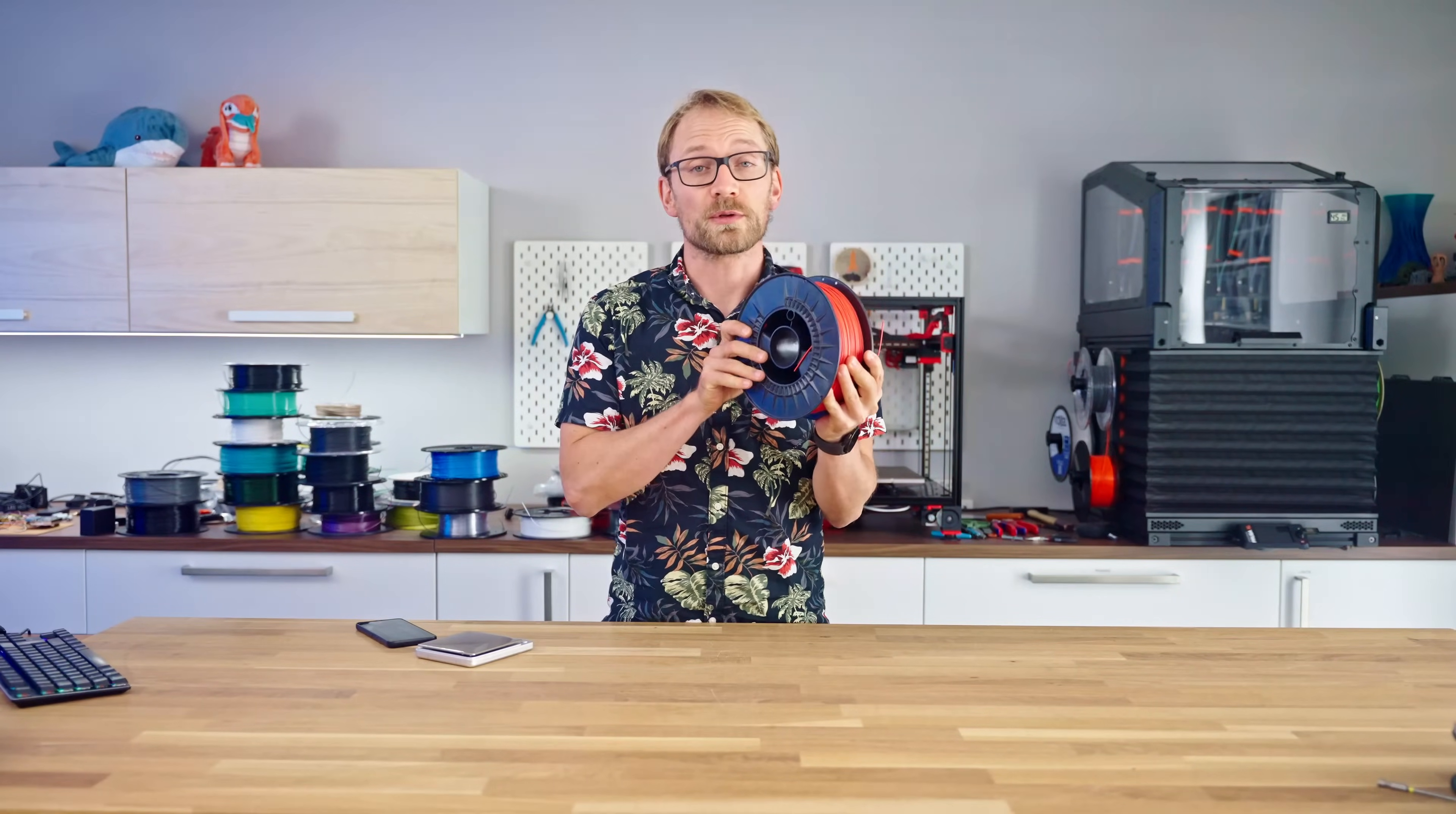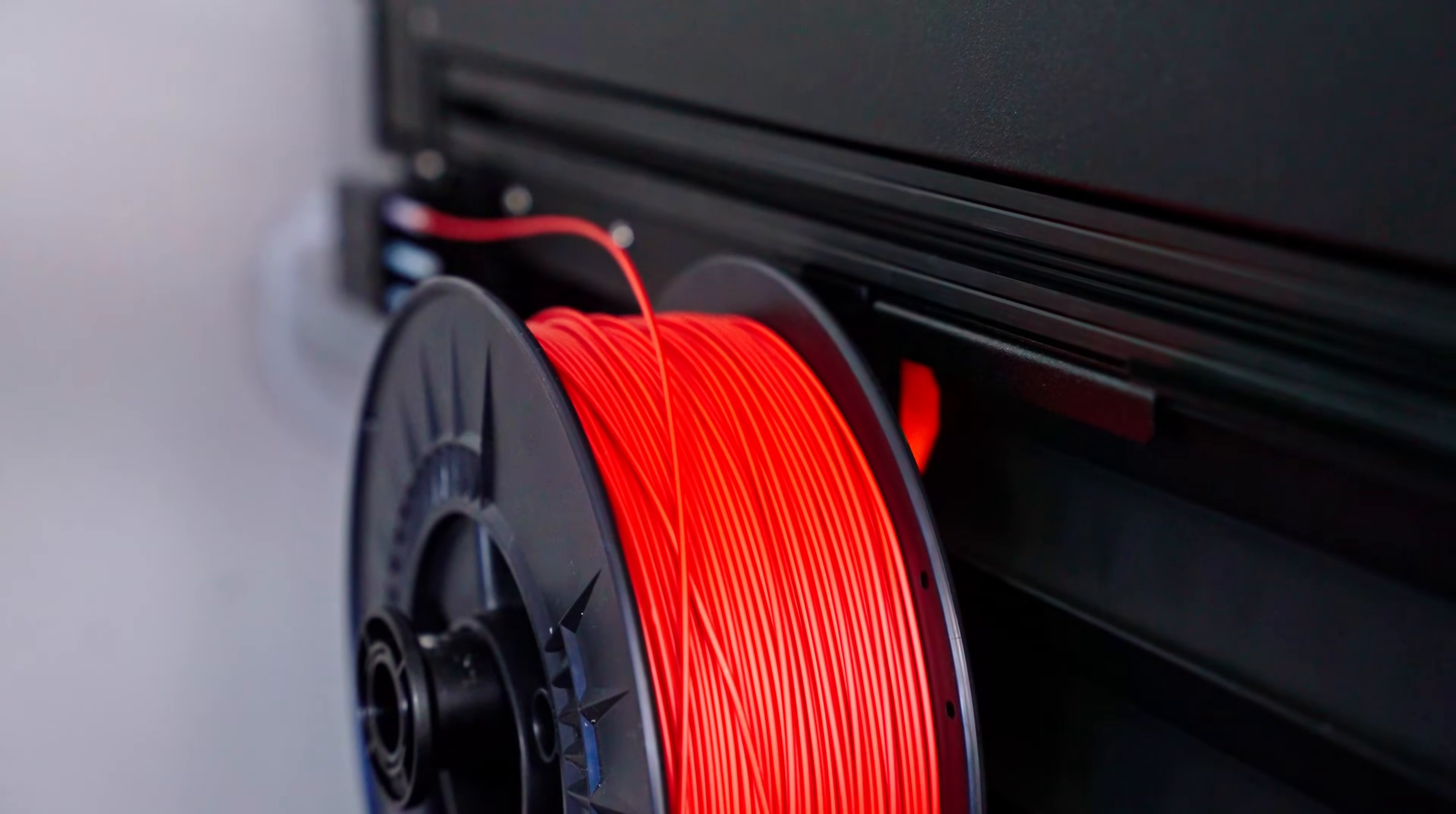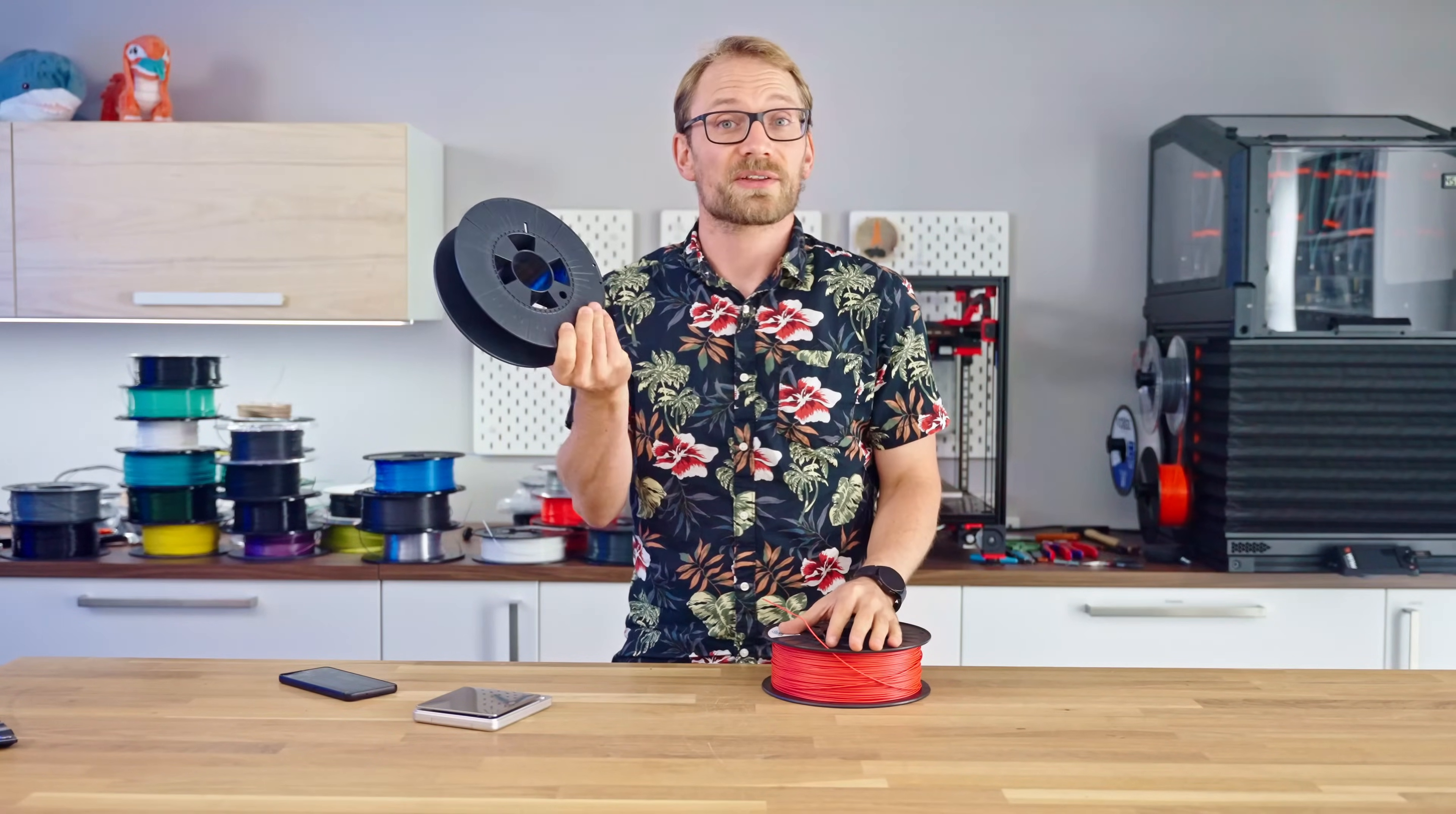When you get a 1kg spool of filament, you get a thousand grams in a nice round strand that you can run through your printer, but you also get a spool, which is another roughly 215 grams of perfectly good plastic. So are you just gonna throw that away?